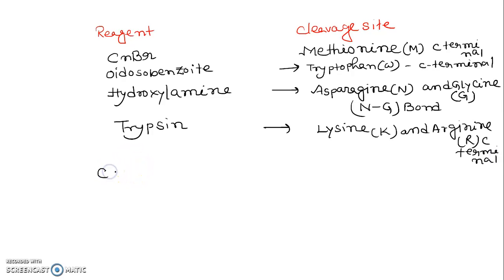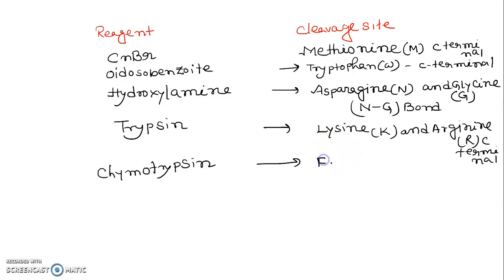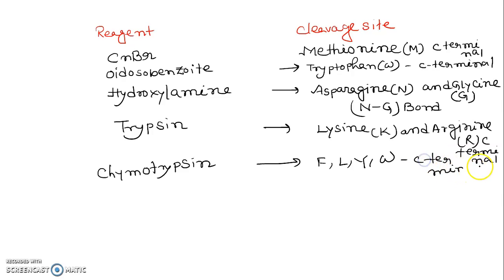Chymotrypsin cuts at phenylalanine, leucine, tryptophan, and tyrosine — most of the aromatic amino acids — at the C-terminal side. You must know the single letter codes: phenylalanine is F, leucine is L, tyrosine is Y, and tryptophan is W.